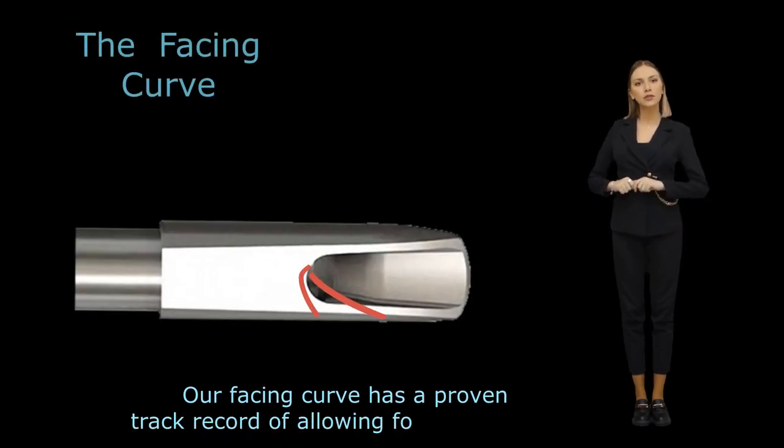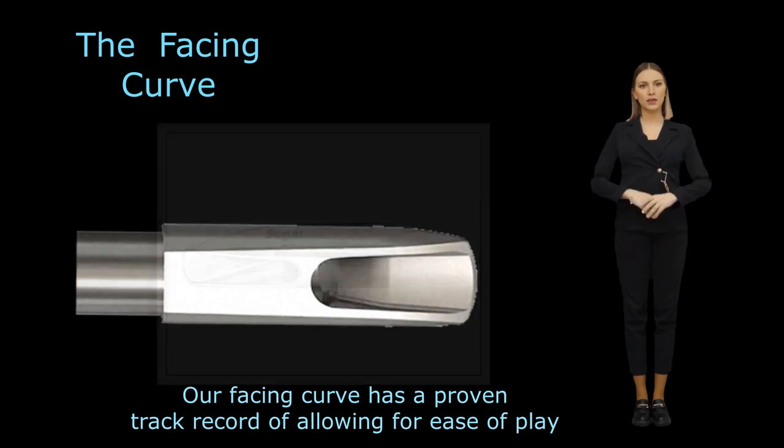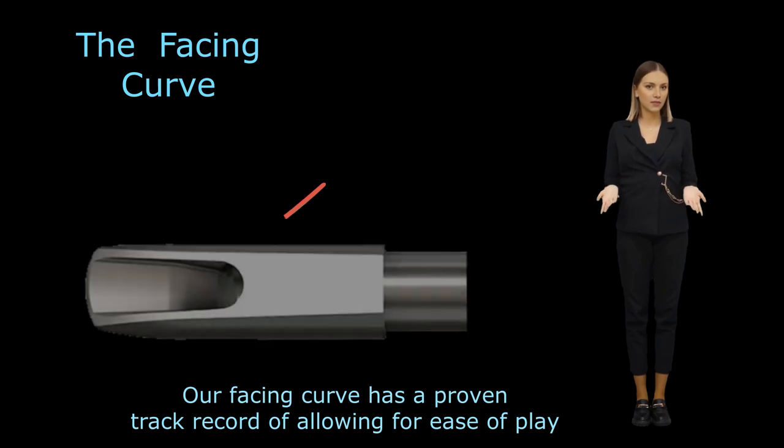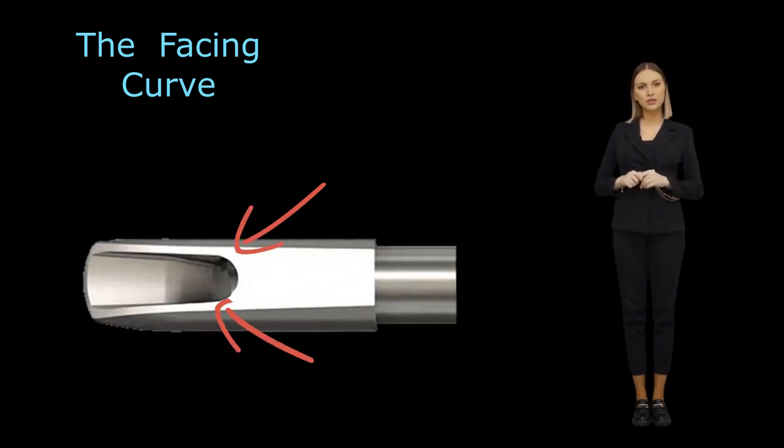The facing curve is the continuous curve starting at the break point and ending at the tip rail. It can be observed when looking at the mouthpiece from the side. The facing curve varies among mouthpiece brands and significantly impacts the mouthpiece's response. It is crucial for the facing curve on both side rails to be parallel.